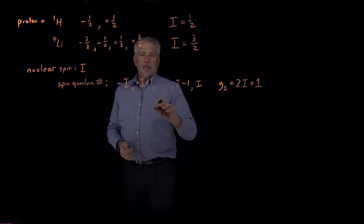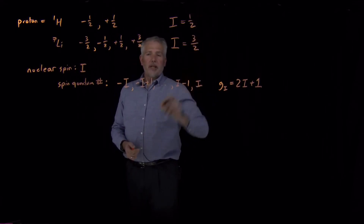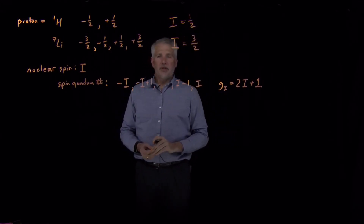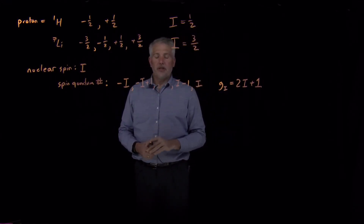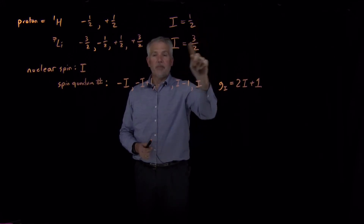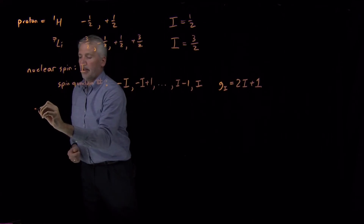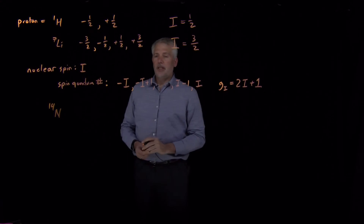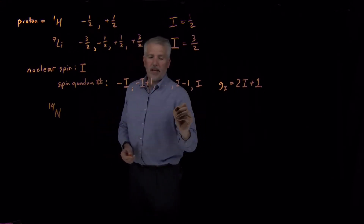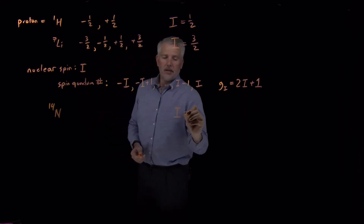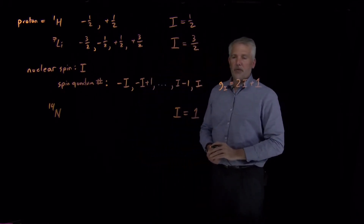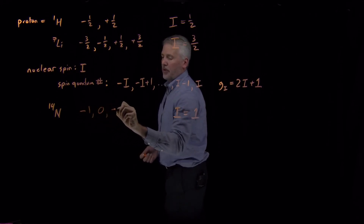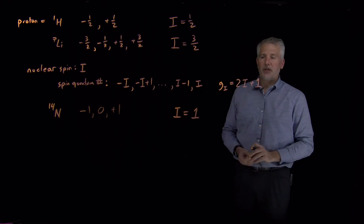The nuclear spin for the proton and for a lithium-7 nucleus are one-half and three-halves respectively. The nuclear spin will always be some multiple of one-half, but it doesn't always have to be an odd multiple of one-half. We can have cases like nitrogen-14, whose nucleus has a nuclear spin of one, so the spin quantum numbers could be negative one, zero, or plus one — three possible values.